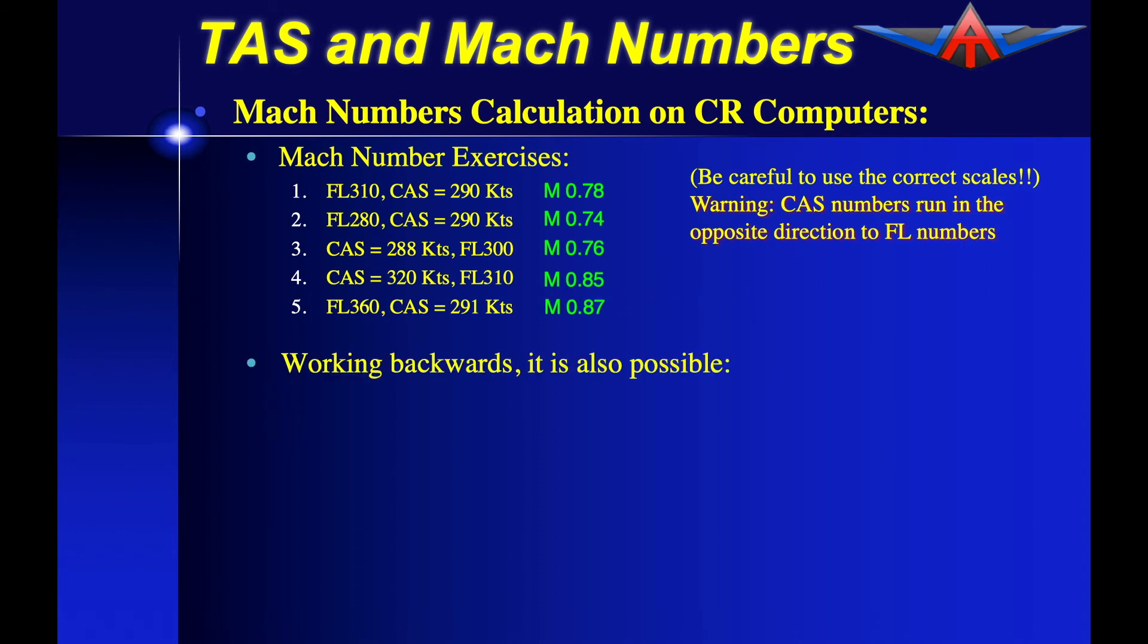We can also work backwards. For example, we started with a flight level and a calibrated airspeed. We simply work backwards. If we are given the Mach number and the calibrated airspeed, we can then read off the flight level. Or, knowing the Mach number and the flight level, we can read off the calibrated airspeed.